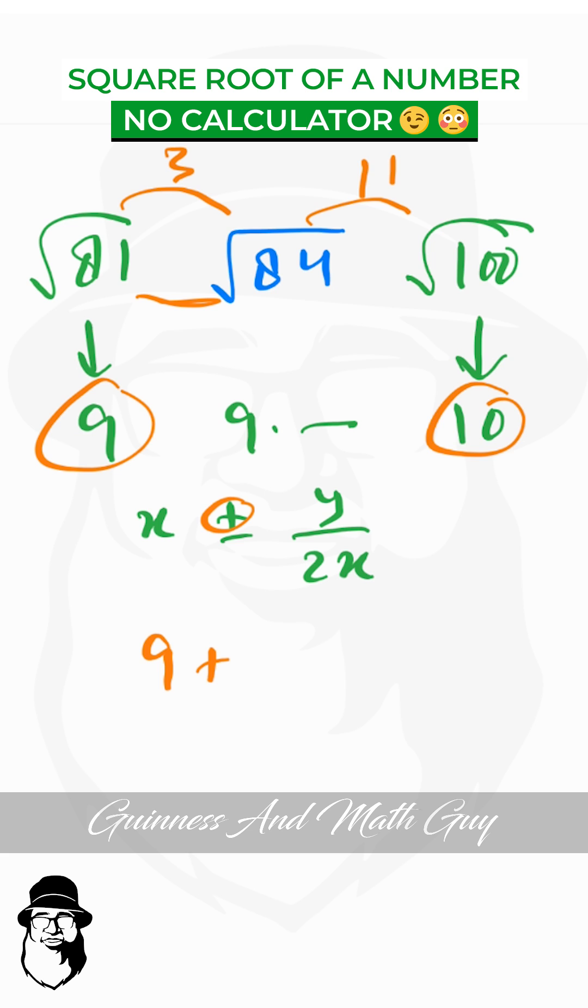So 9 plus y is this distance 3, over 2 times x. We multiply 2 by 9 to get 18. So 9 plus 3 over 18 is 1 over 6 or 0.16. So 9 plus 0.16 is 9.16, and it is accurate to two decimal places.